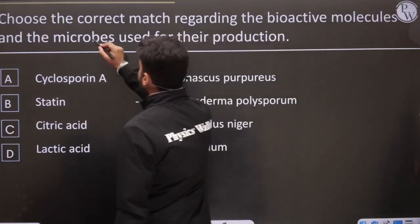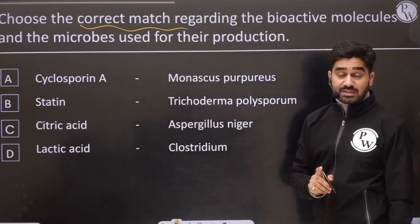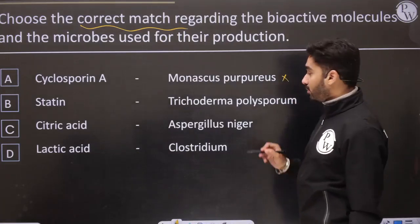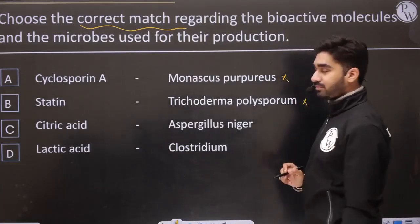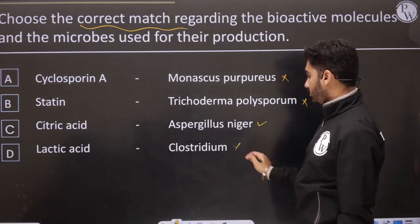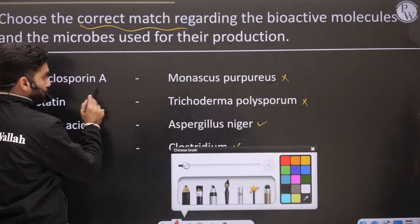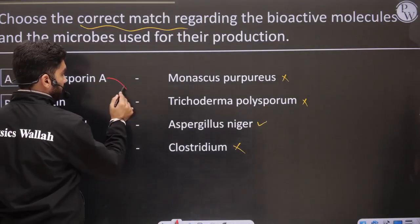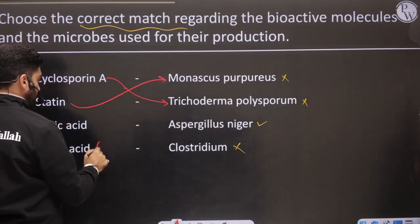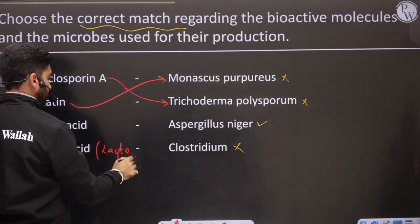Choose the correct match. Cyclosporine A from Monascus — incorrect. Chitin from Trichoderma — incorrect. Citric acid from Aspergillus niger — correct. Lactic acid from Clostridium — incorrect. Cyclosporine A comes from Trichoderma. Statins come from Monascus. Lactic acid comes from Lactobacillus. Clostridium produces butyric acid.